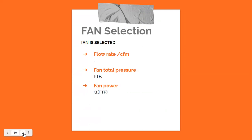In summary, to calculate the external static pressure or fan total pressure: have the friction charts and duct dimensions available, know the flow rates, and use the ASHRAE Handbook where fitting loss coefficients are tabulated. Calculate the fan total pressure, multiply by the flow rate to get the fan power, and this completes the introduction to fan selection and how external static pressure and fan total pressure are determined.